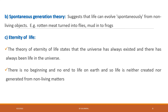The second main theory of origin of life is spontaneous generation. This theory suggests that life can evolve spontaneously from non-living objects — for example, rotten meat turning into flies, or frogs originating from mud. However, this theory has been disproved once and for all.